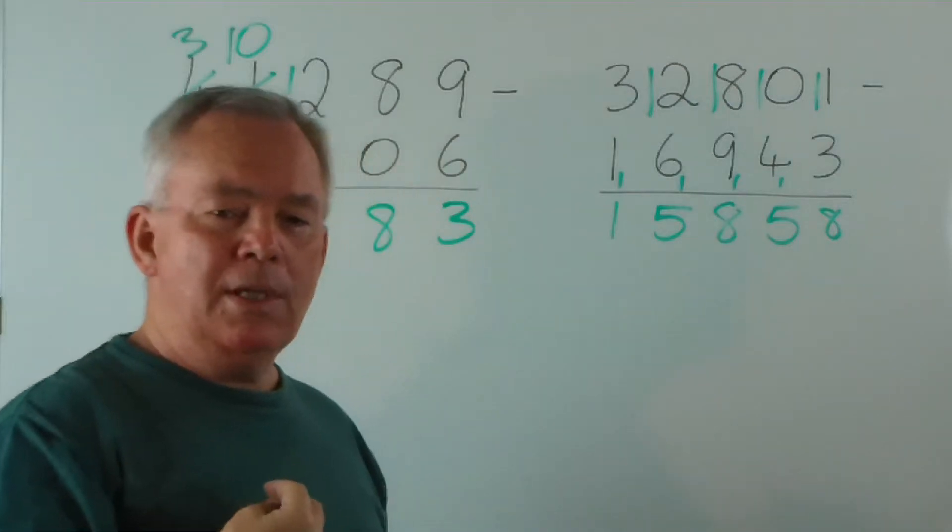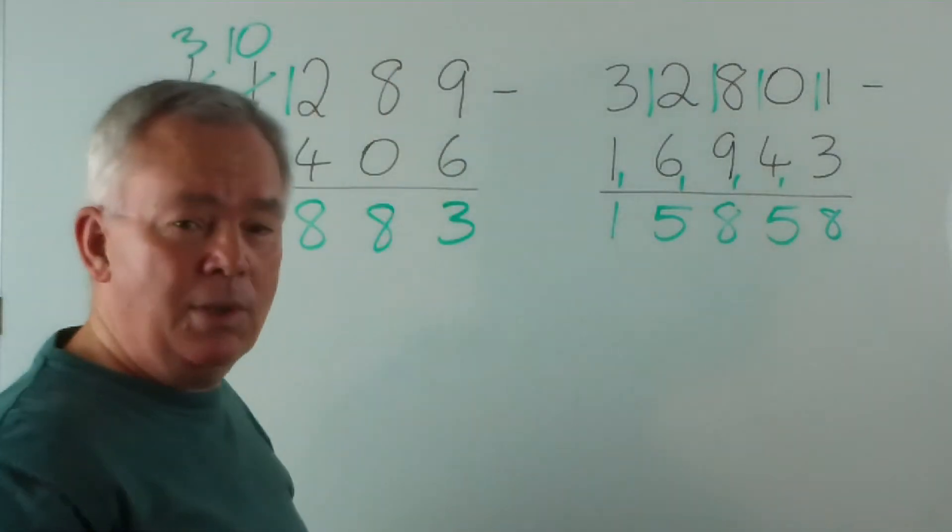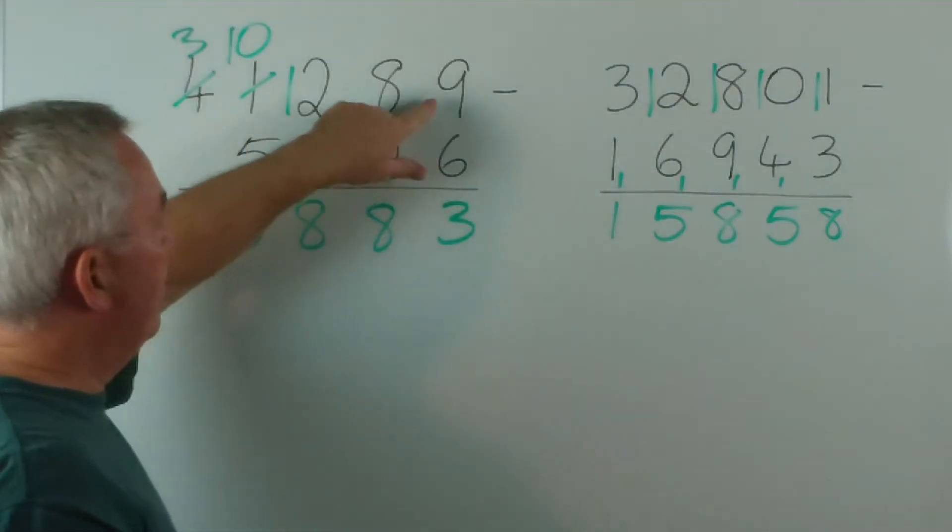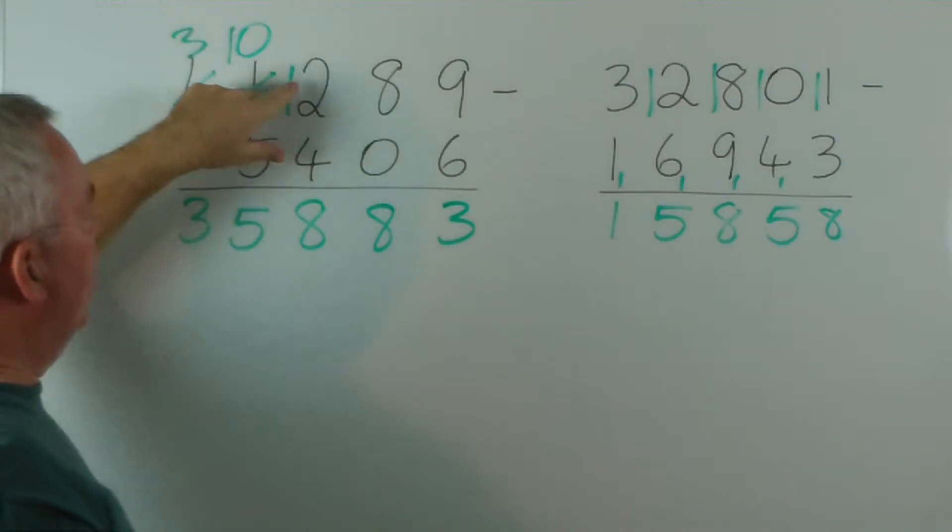So, how do we check this using addition? We simply add the bottom two numbers and we should get the top one. 6 and 3 make 9. 0 and 8 make 8. 8 and 4 are 12.